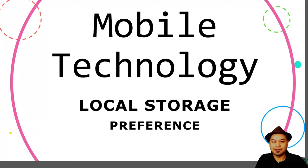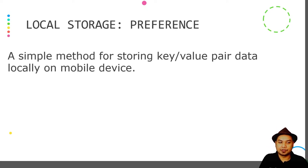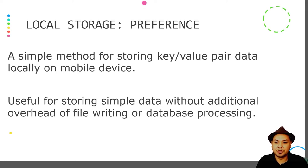We are going to learn about local storage in Android using Preferences. Preferences is a simple method for storing key-value pair data locally on a mobile device. It is useful for storing simple data without the additional overhead of file writing or database processing, making it easier to store data without additional programming.